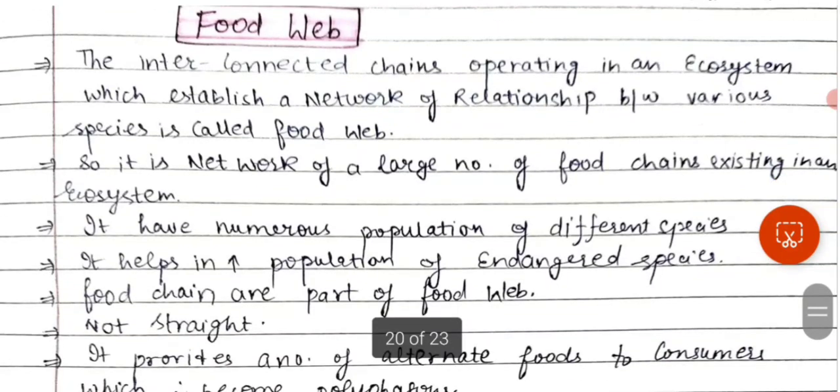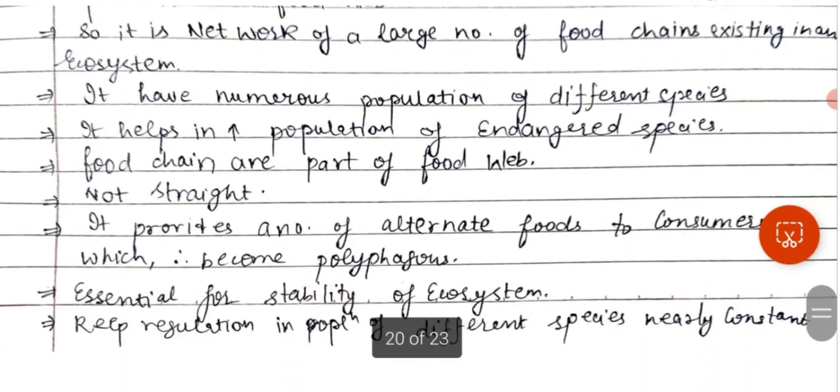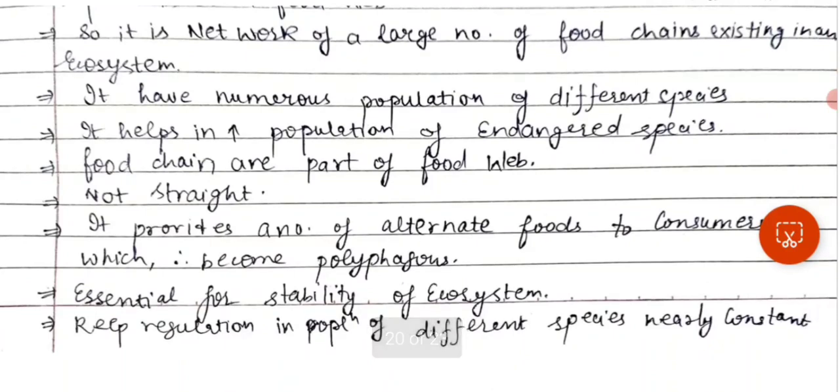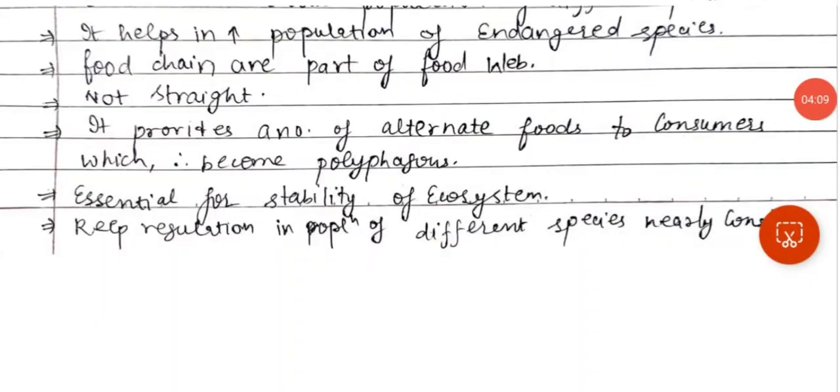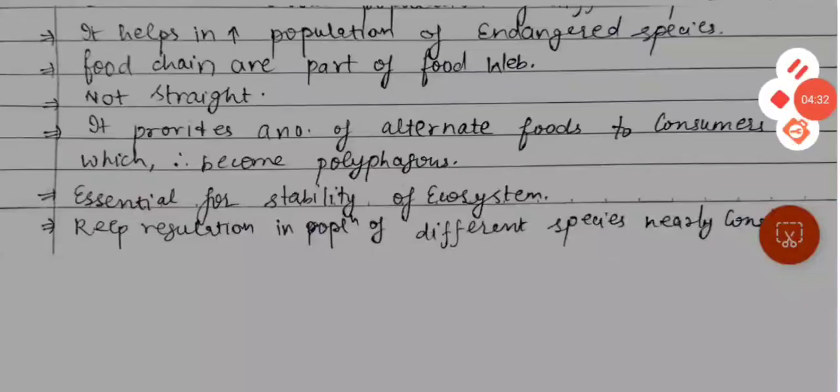It has numerous populations of different species. It helps in increasing the population of endangered species. Food chains are a part of food web. They are not straight and it provides a number of alternate foods to the consumer. For example, frog can eat grasshopper, butterfly, or fruit fly, so there's a variety of food. Essential for stability of ecosystem and population regulation.